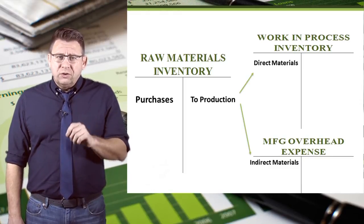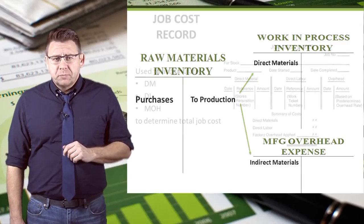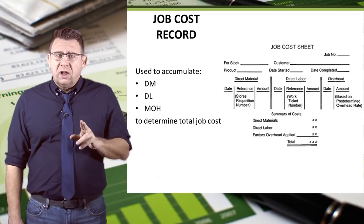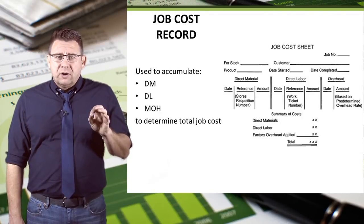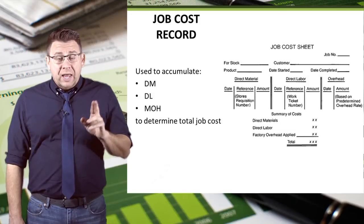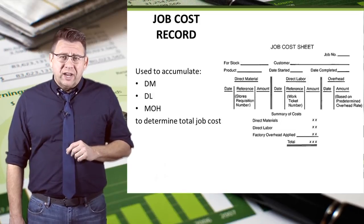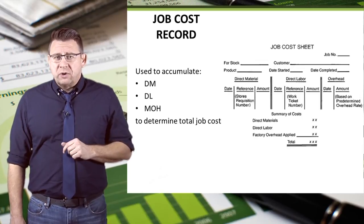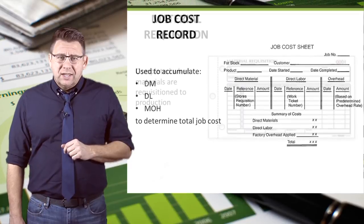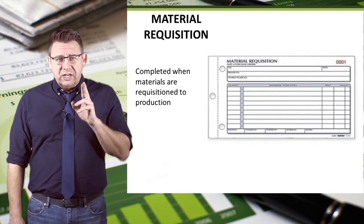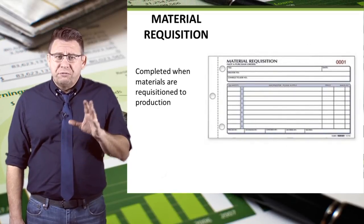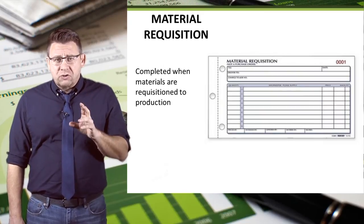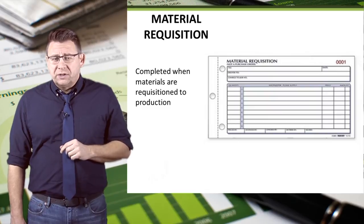We will learn how to allocate indirect costs in an upcoming video podcast. A job cost record is used to accumulate all of the direct material and direct labor used on a job, as well as the manufacturing overhead allocated to the job. Each job will have its own job cost record for keeping track of the job's cost. Each time production needs some raw materials, it will fill out a material requisition — the paper trail that tracks the physical movement of raw materials to production.